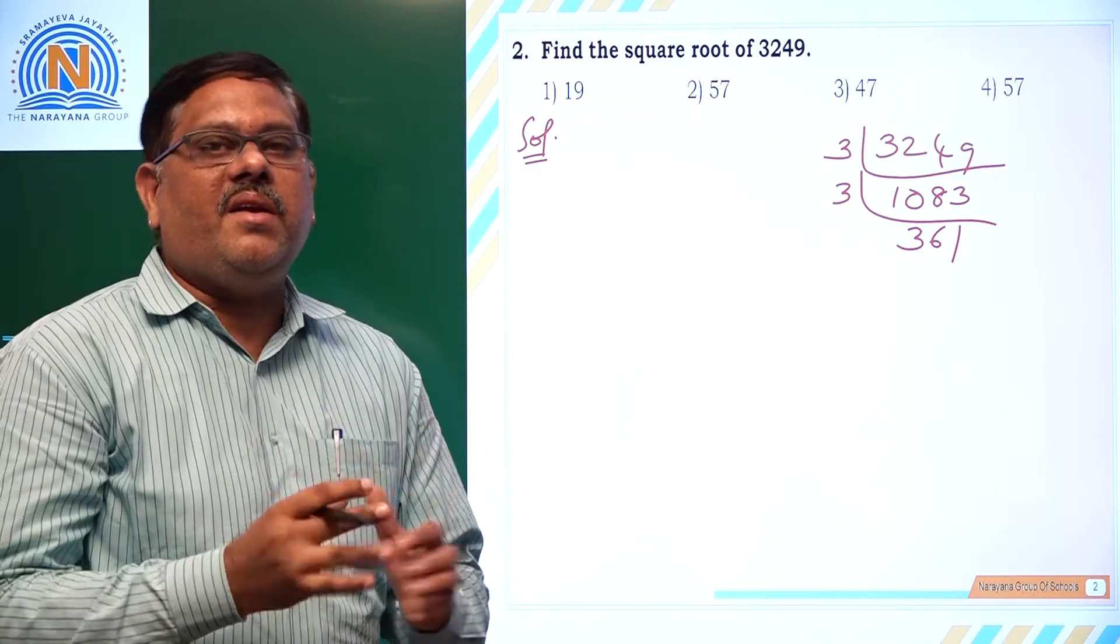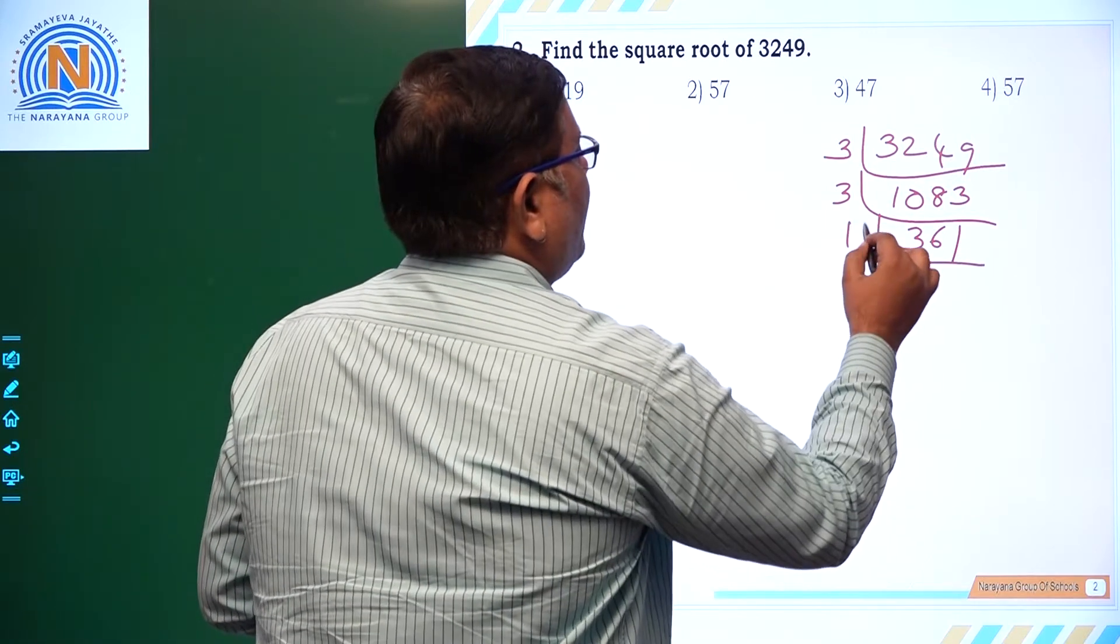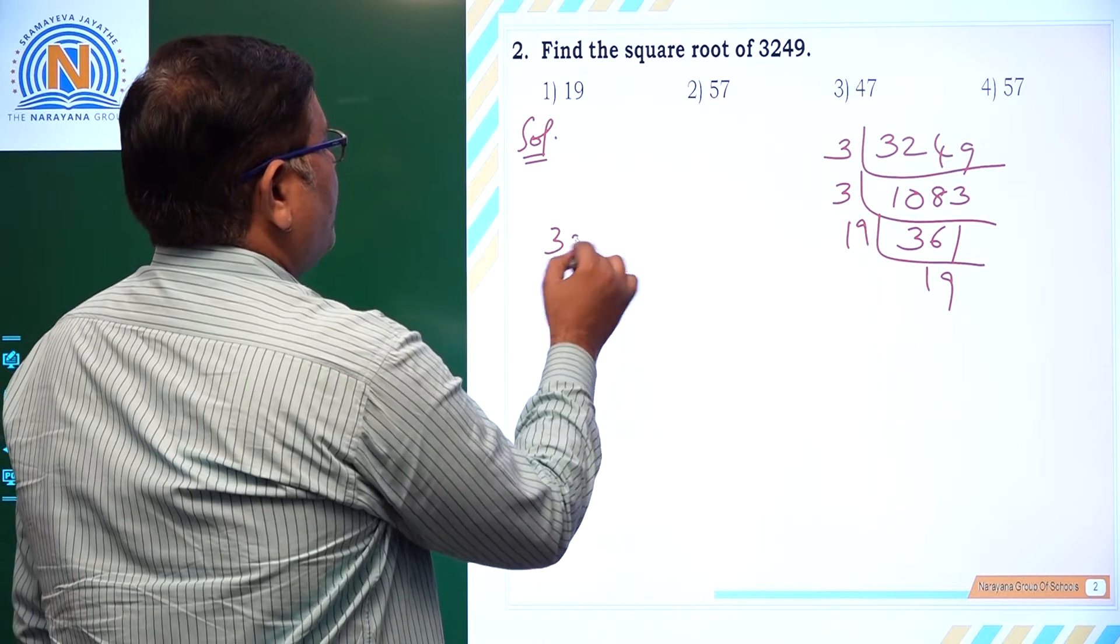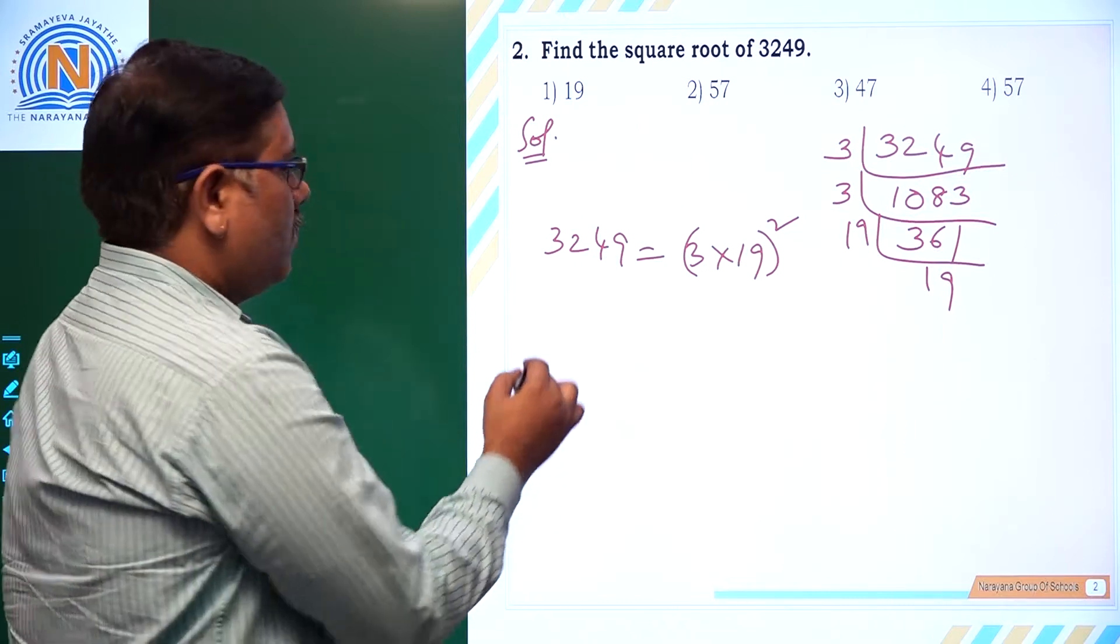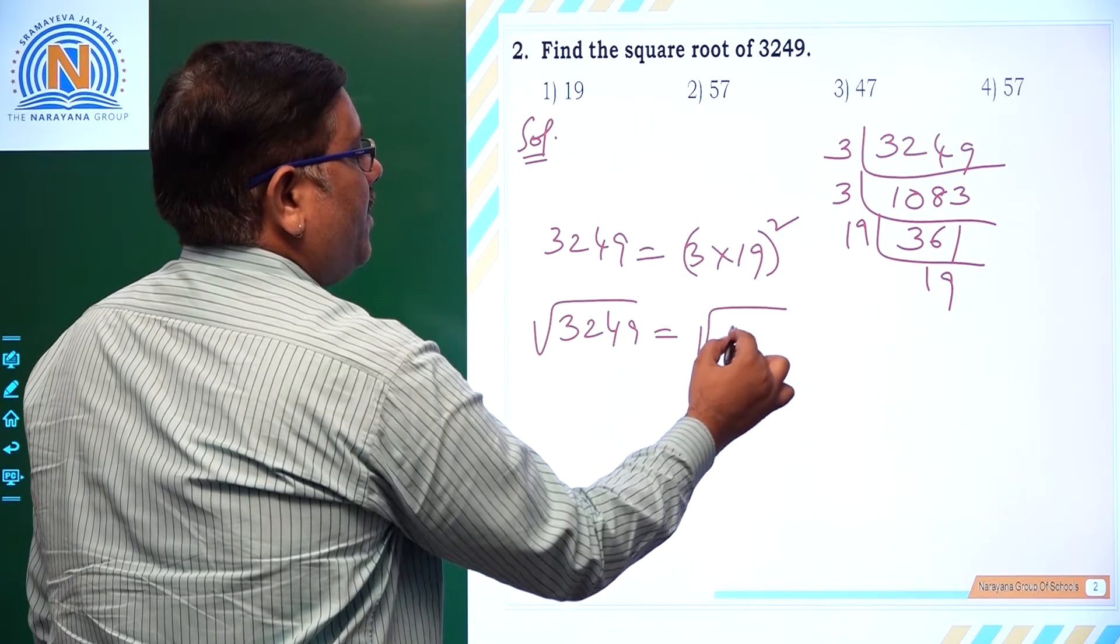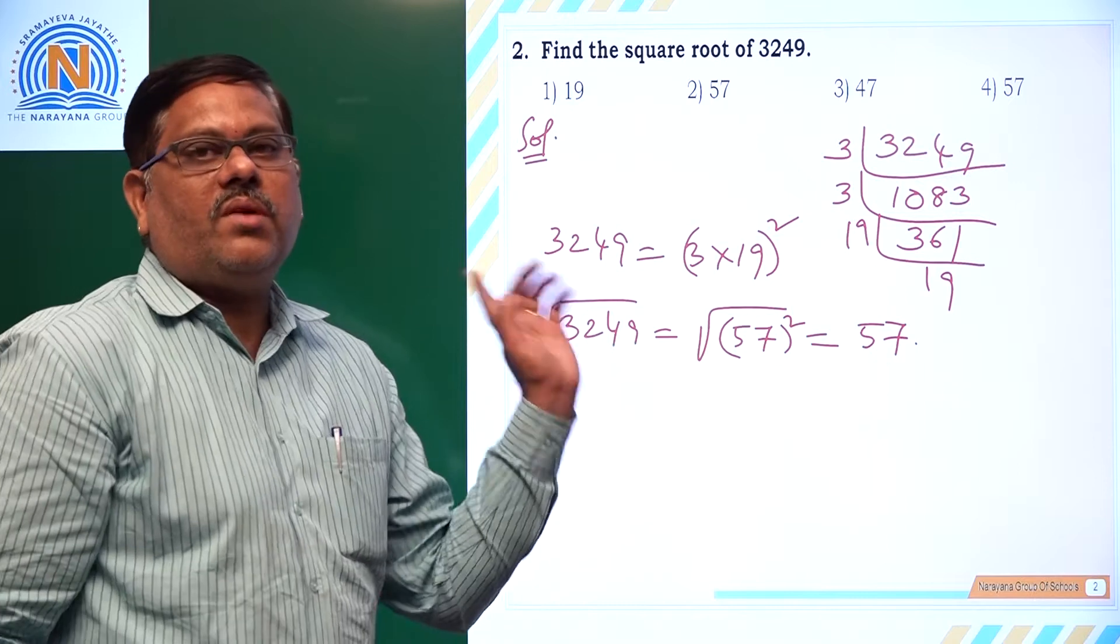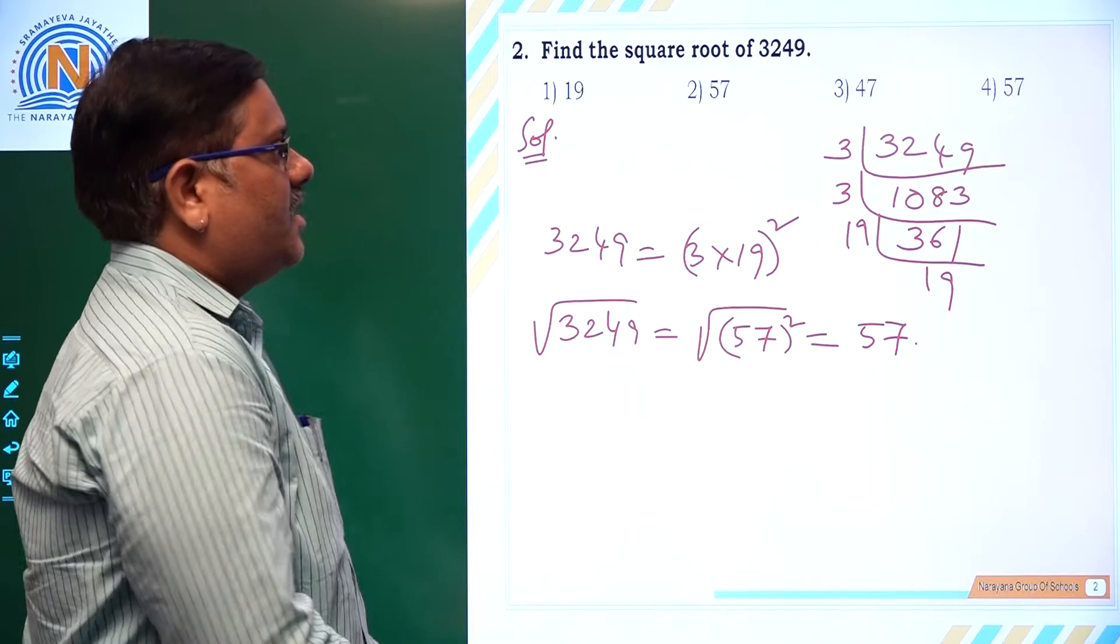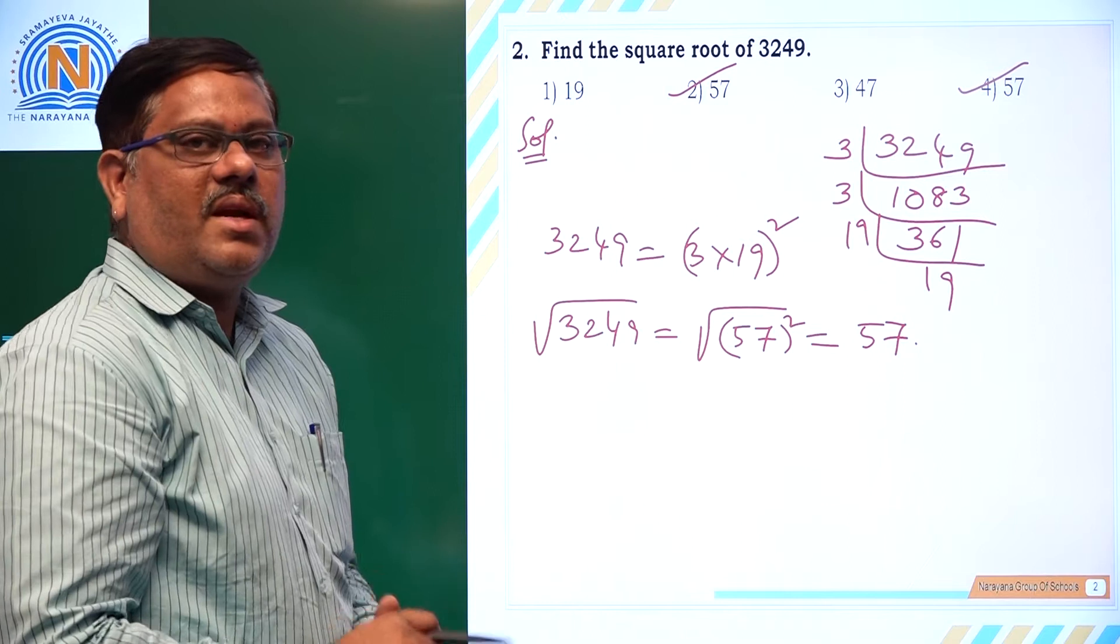361 is a square of 19. So it is only divisible by 19 here. So we can say it as 19 times 19. Now 3249 is equal to 3 into 3 into 19 into 19, that's 3 square into 19 square. So root over 3249 is root over 3 times 19 whole square, that's 57 whole square. So that is otherwise 57. Under root of 3249 is 57. We have in second option as well as fourth option, both of them we can consider as right answers.